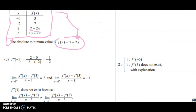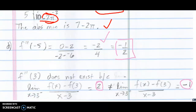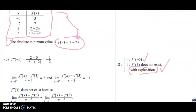In letter d, one point for finding the slope of f prime, or the second derivative at negative five, to be negative one half. One point for declaring that the second derivative at three does not exist, but you must have the explanation — if you don't have the explanation, you don't get the point. That's where the left and right derivatives not equaling each other comes in. I did make a mistake now that I see the scoring rubric, so I would not get that second point — I'll get the first point but not the second point.